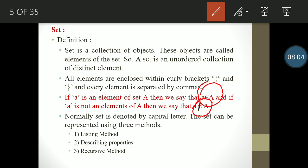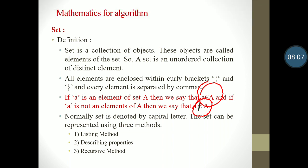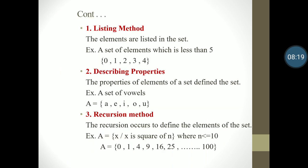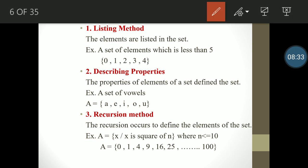If a is not an element of A, we say that a does not belong to A — this sign is for 'not belongs to.' Normally, a set is denoted by a capital letter. A set can be represented using three methods: first is the listing method, second is describing properties, and third is the recursive method. In the listing method, the elements are listed in a set. For example, a set of elements less than 5 would be {0, 1, 2, 3, 4}, written with curly braces and items separated by commas.